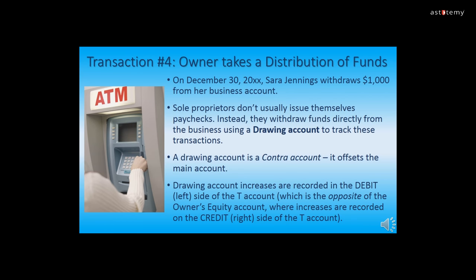Now it's time to tackle transaction four where an owner takes a distribution of funds. On December 30, 20XX, Sarah Jennings withdraws $1,000 from her business account. Sole proprietors do not usually issue themselves paychecks — instead, they withdraw funds directly from the business and track these withdrawals using a drawing account named Sarah Jennings Drawing. At the end of the accounting cycle, the drawing account is closed out and adjusted into the owner's equity account. A drawing account is a contra account, meaning it offsets the main account. Increases in the drawing account are recorded on the debit left side of the T-Account, which is opposite to recording increases in the owner's equity account.